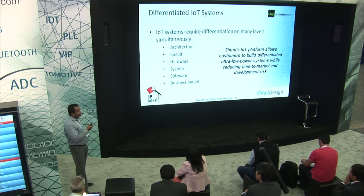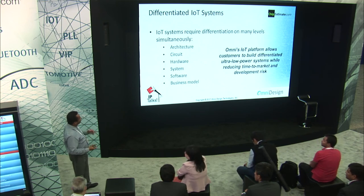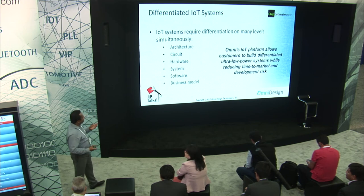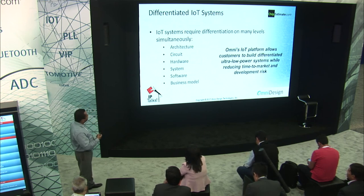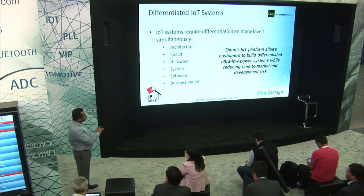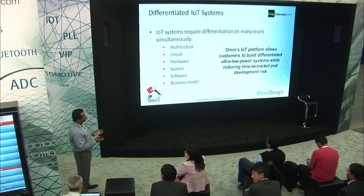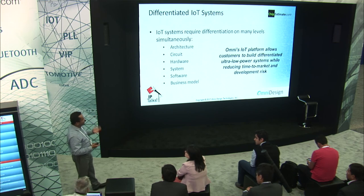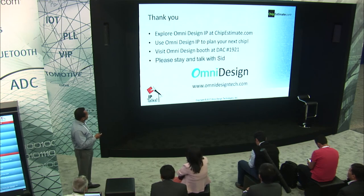In IoT systems, if you want a differentiated product, you need differentiation at many levels — architecture, circuit, system, and software. But ultimately, if your electronics at the bottom doesn't have the right hooks, all of that is useless. At Omni, we make sure you can forget about the electronics and focus on what you do well. We ensure the electronics needed is all there, doing what you need, giving you a differentiated solution that is plug-and-play — so you don't spend months figuring out how the analog IP works. You put them together and they work as expected.